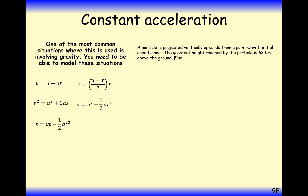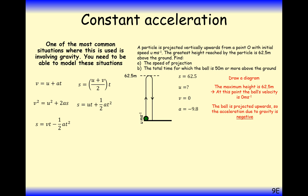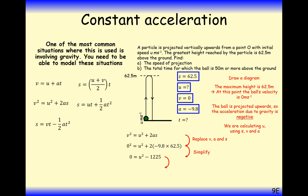A particle is projected vertically upwards from point O with initial speed U and reaches a greatest height of 62.5 metres. Find the speed of projection. At maximum height, velocity equals zero, and acceleration is minus 9.8 with upwards as positive. Using V squared equals U squared plus 2AS, substituting in the numbers and rearranging to find U — taking the positive value — gives 35 metres per second.